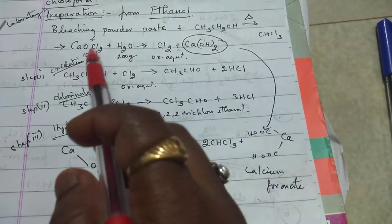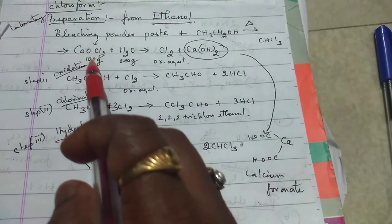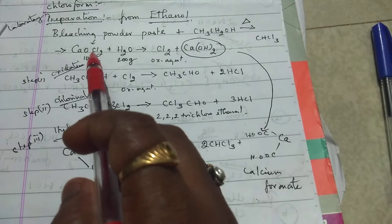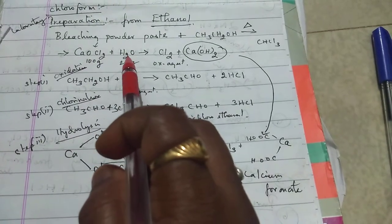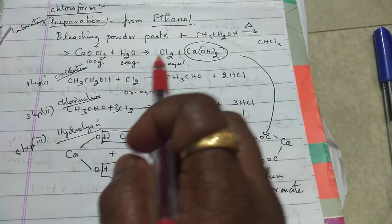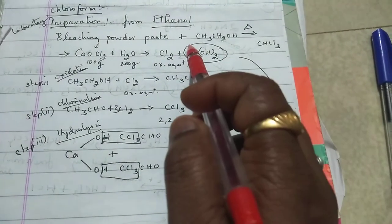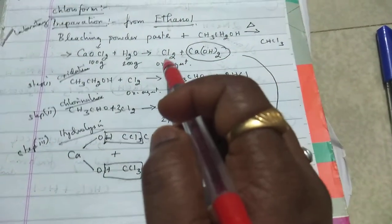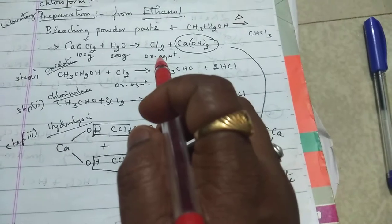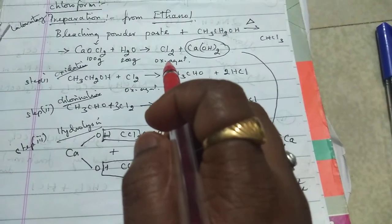The first step is 100 grams of bleaching powder in 200 grams of water, which gives calcium hydroxide and liberates chlorine. This chlorine acts as an oxidizing agent.